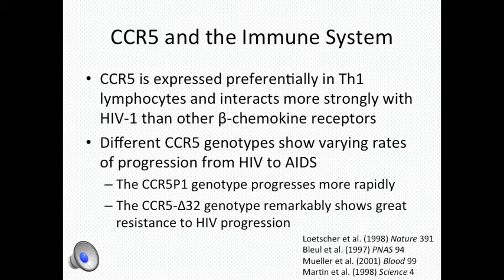CCR5 is expressed preferentially in TH1 lymphocytes, strengthening the link between its functionality and immune response. There are other beta-chemokine receptors,